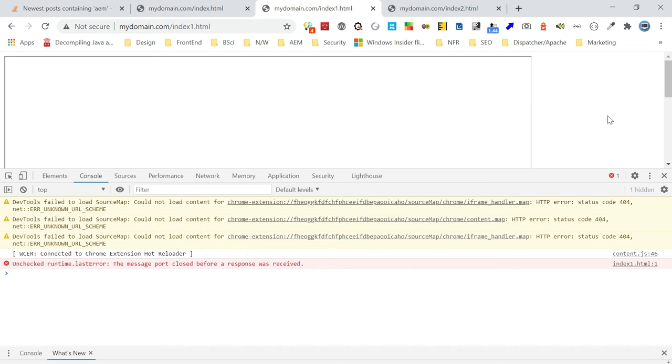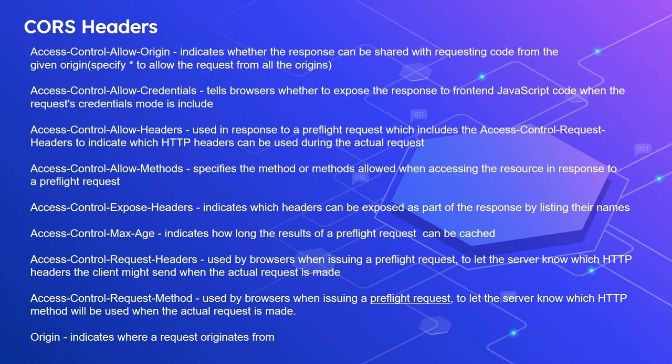Let us see the headers enabled as part of the CORS specification. The important one is Access-Control-Allow-Origin - this indicates what origins are allowed to access the resource. You can enable a specific origin name, for example http://sub.mydomain.com. When specifying the origin name you need to specify the actual protocol - either http or https - because if the protocol, domain, or port varies it is considered a different origin. You can also specify a wildcard star, meaning all origins are allowed.